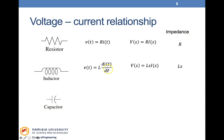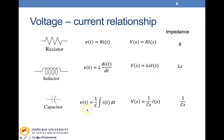For the inductor, taking the Laplace transform of the voltage-current relationship gives V(s) equals Ls·I(s), so the impedance is Ls. For the capacitor, taking the Laplace transform gives V(s) equals (1/Cs)·I(s), and the impedance is 1/Cs.